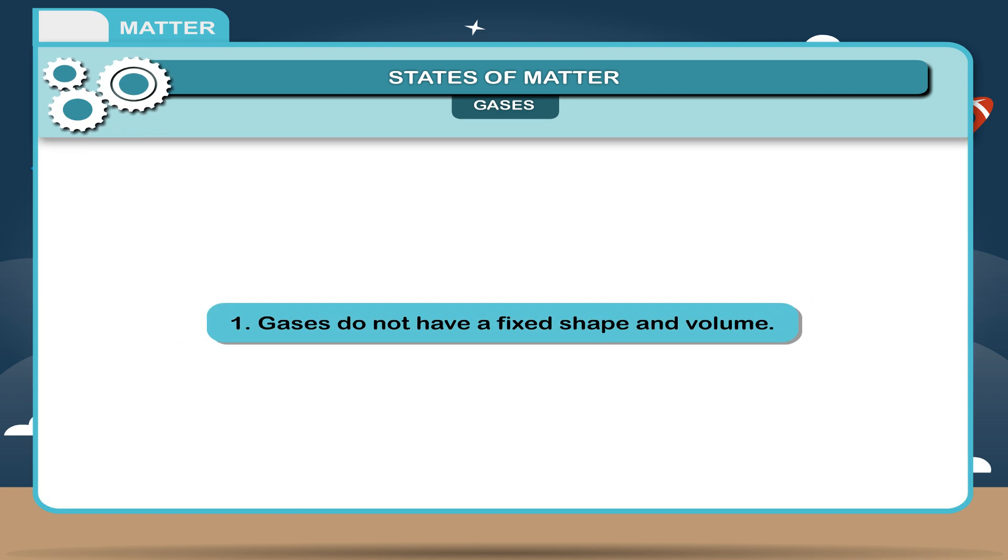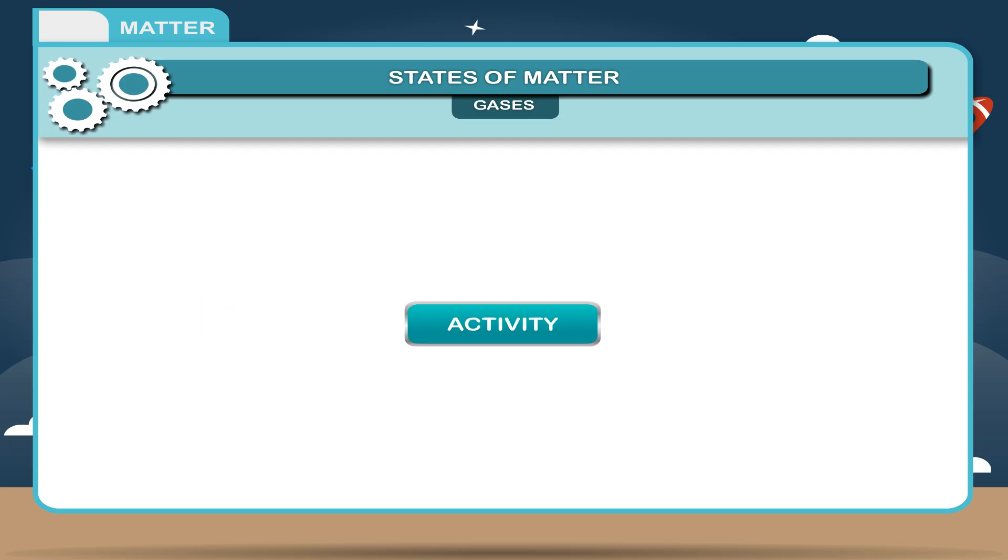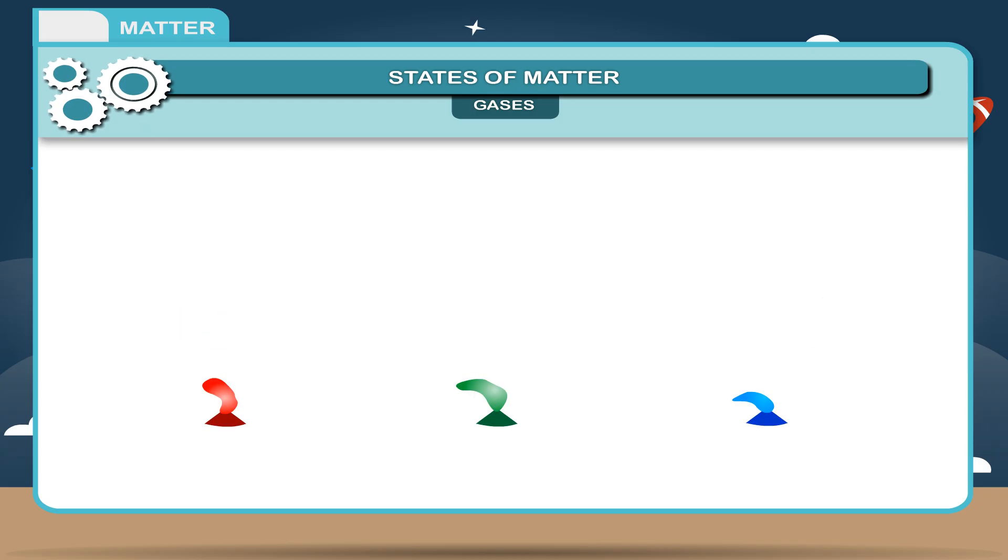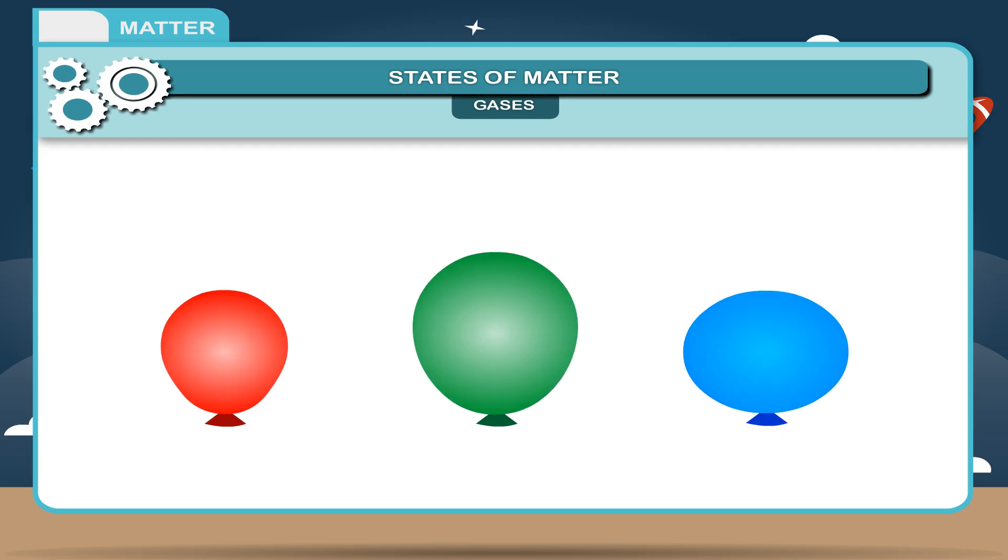1. Gases do not have a fixed shape and volume. Activity: To show that gases do not have a fixed shape, take 3 balloons of different shapes and inflate them with air. The air inside the balloons takes the shape of the balloons.